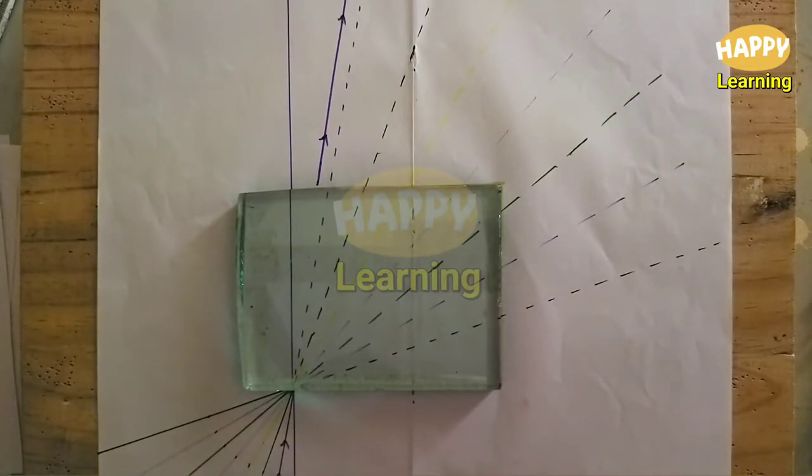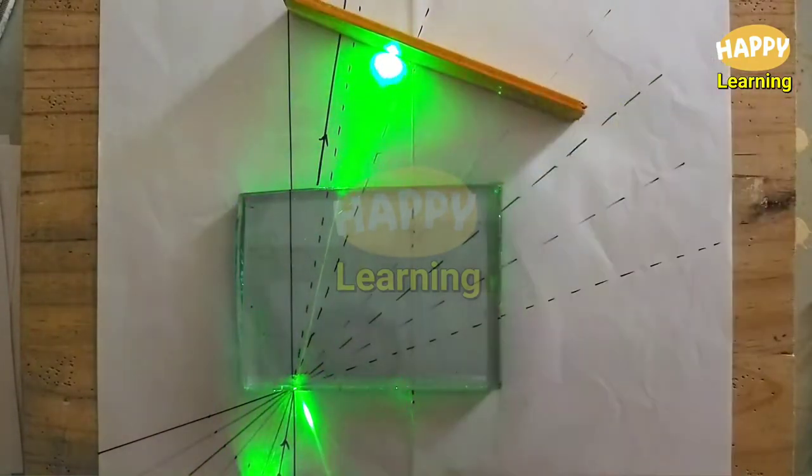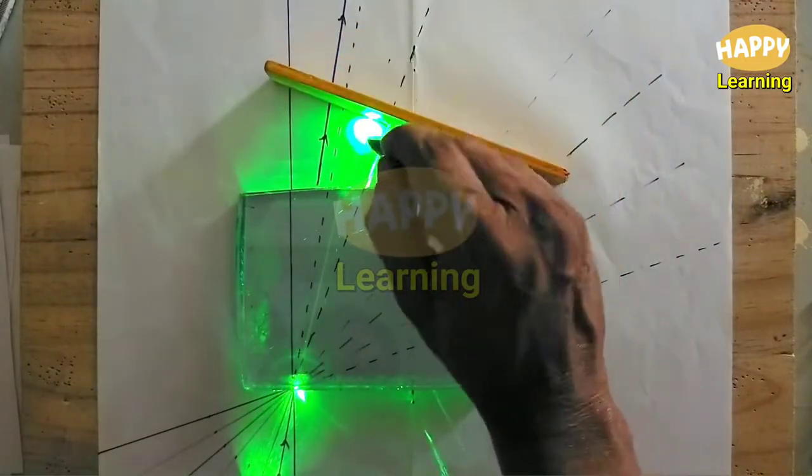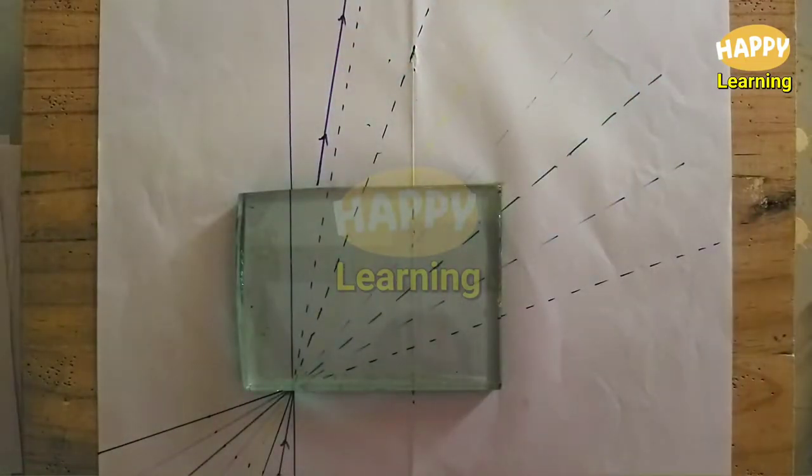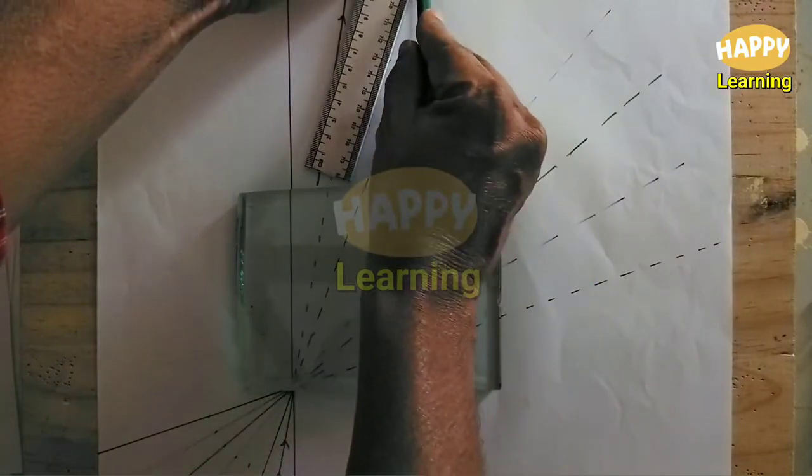Now repeat this experiment for the angle of incidence 20 degrees. Note down the emergent ray and join these two points that will be the emergent ray for the angle of incidence 20 degrees.